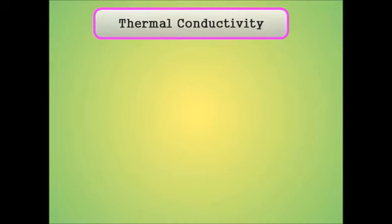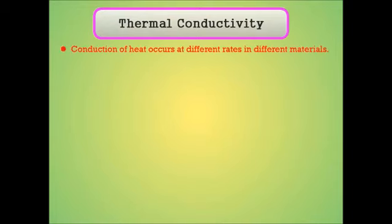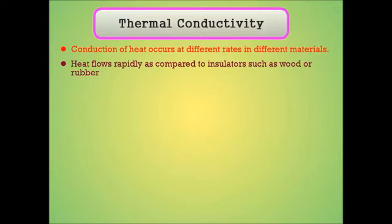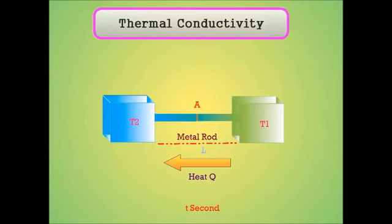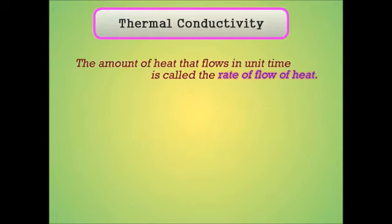Thermal conductivity: heat ki conduction different materials mein different rates par occur hoti hai. Insulator ke mukable mein matter mein heat rapidly flow karti hai. Consider a solid block, each side of cross-sectional area A. One of its two side faces is heated to a temperature T1.